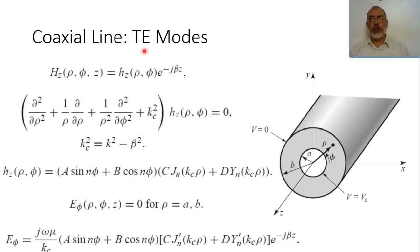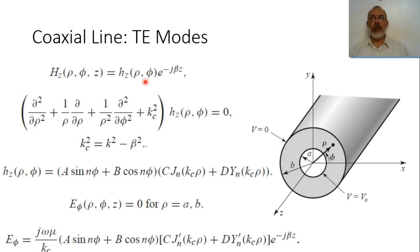Transverse electric modes are characterized by the longitudinal electric field component Ez equals zero, but Hz does not equal zero. Hz is presented in cylindrical coordinates as a function of rho, phi, and z, which can be written as a modal function hz(rho, phi) multiplied by the propagation function e to the power minus j·beta·z.